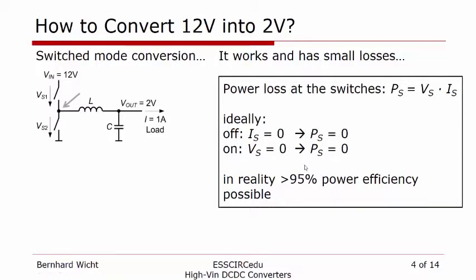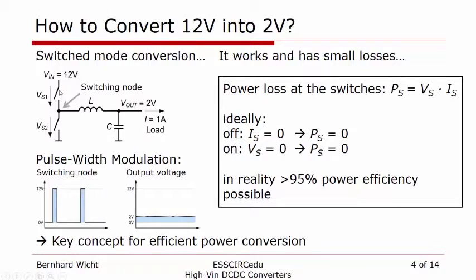The real implementation uses transistors as switches, and one of the common concepts is to generate pulse patterns at the switching node as shown here. The LC tank acts as a low-pass filter, which provides a DC voltage at the output proportional to the average of the pulse pattern at the switching node. By changing the pulse width, we can adjust the DC voltage at the output. The concept of pulse width modulation is one of the key methods for efficient power conversion.